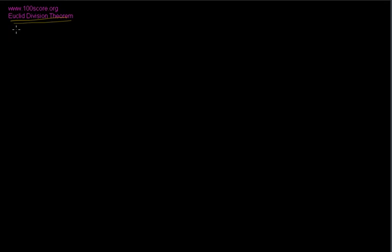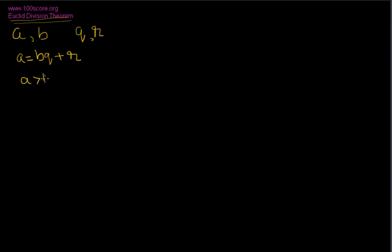Let's go ahead and see what exactly this theorem states. This theorem states that for any two given numbers A and B, there exists a set of unique numbers Q and R such that A is equal to B times Q plus R, where A is greater than B. Also, R is greater than or equal to 0 and R is less than B.